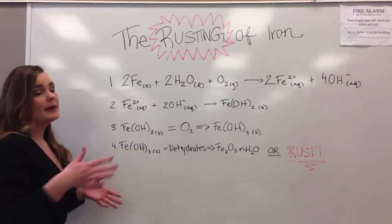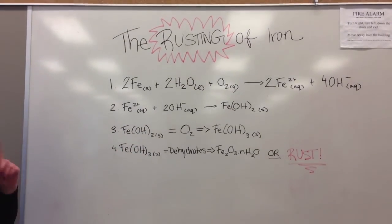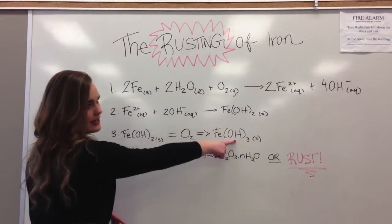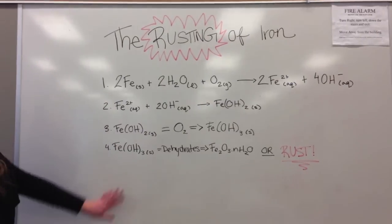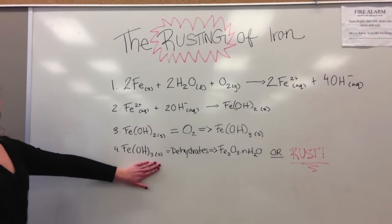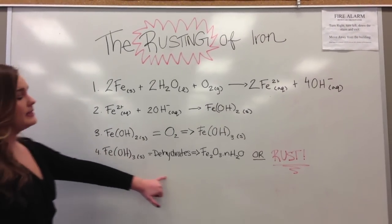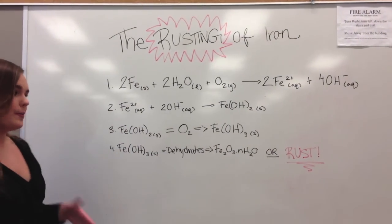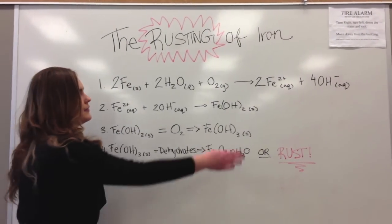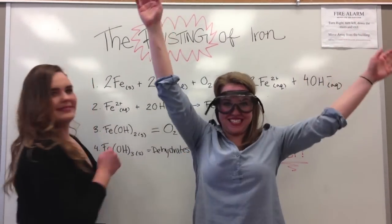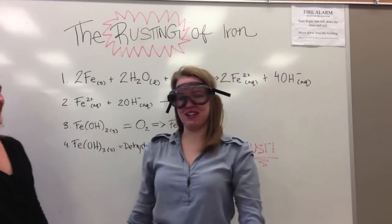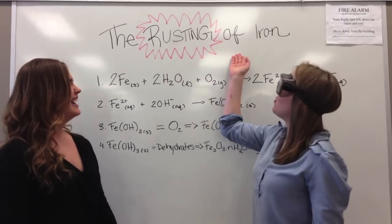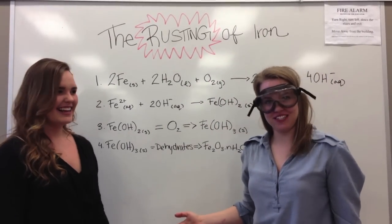It's actually going to become oxidized once again into iron 3-hydroxide. And it's going to become dehydrated — it's going to lose a water molecule to form rust. Rust! Thanks, Amina, for teaching us the rusting of iron equations. Let's move along.